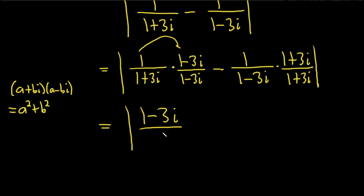So here our a is 1 and our b is 3. So this will be 1 squared plus 3 squared. And then same thing here. 1 times 1 plus 3i, so minus 1 plus 3i over, and then same thing, a squared plus b squared. So 1 squared plus 3 squared.